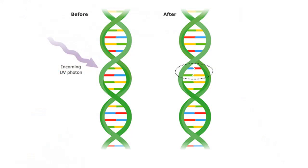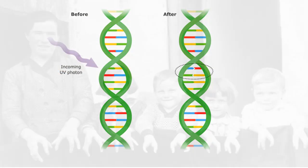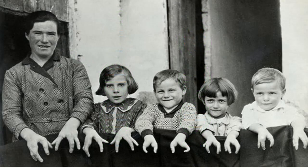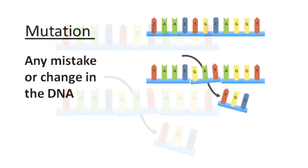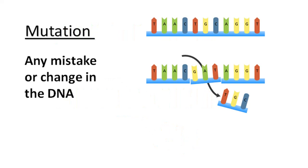Sometimes there is no effect on an organism, but often mistakes in DNA can cause serious consequences for individual organisms. The cell processes that copy genetic material and pass it from one generation to the next are usually accurate. Accuracy is important to ensure the genetic continuity of both new cells and offspring. However, sometimes mistakes can occur in the genetic material. Any mistake or change in the DNA sequence is called a mutation.